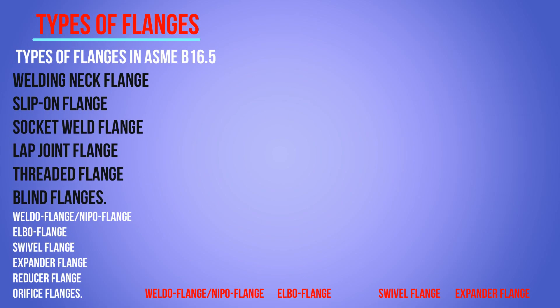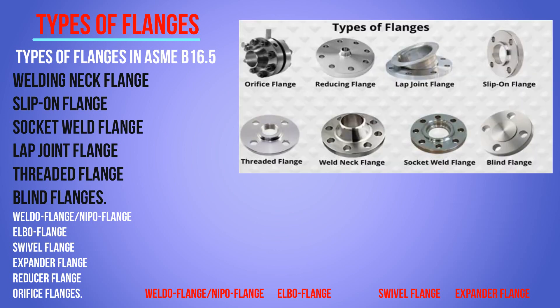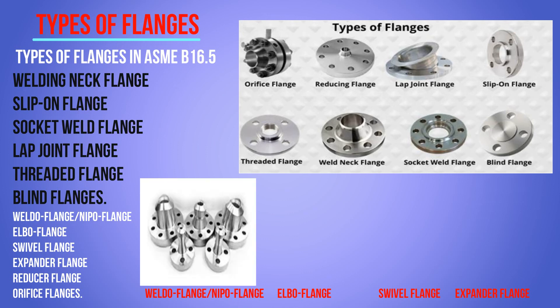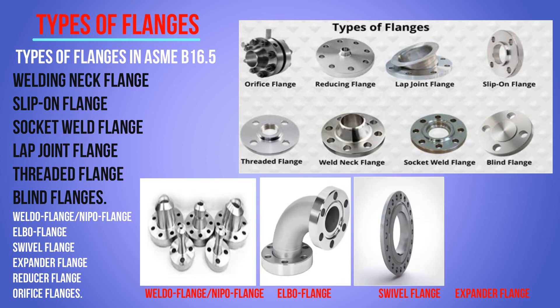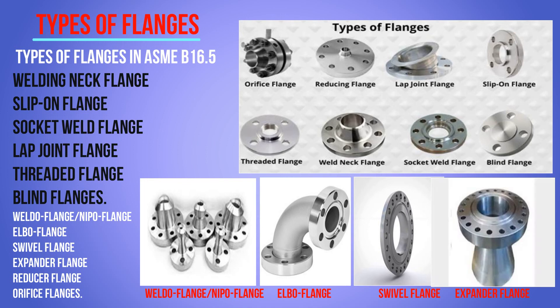The most common types of flanges as per ASME B16.5 are: weld neck flange, slip-on flange, socket weld flange, lap joint flange, threaded flange, blind flange, weld-o flange, nippo flange, elbow flange, swivel flange, expander flanges, reducer flanges, and orifice flanges. All these types can be seen in the picture, including the orifice and reducing lap joints and so on.